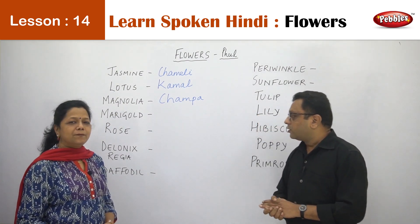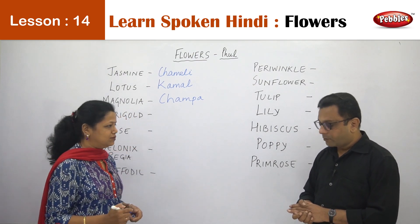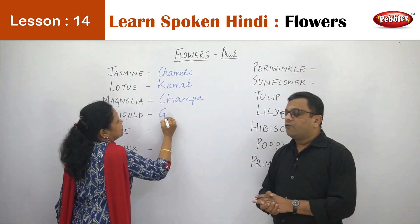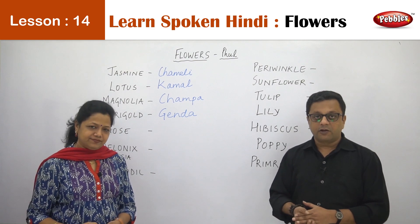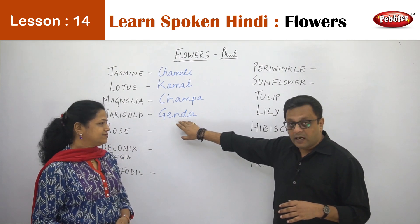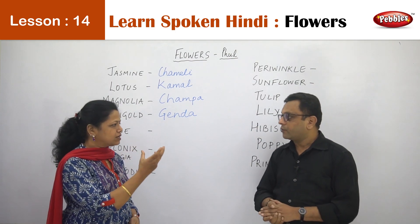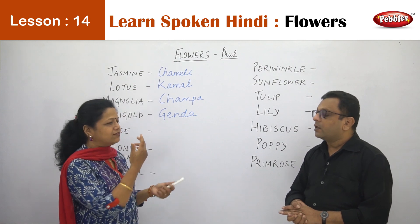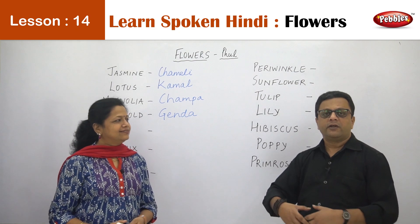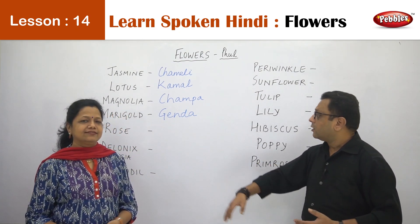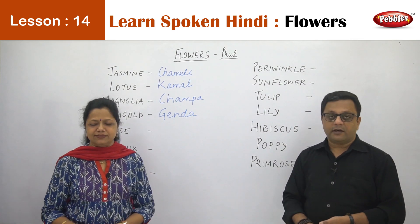The next is the Marigold. Marigold is very commonly used in Indian houses — that is Gende ka Phool, or Genda. For all auspicious occasions and all festivals, you will see the garlands of Genda or Marigold on your door. They come in yellow and orange colors, and people also make Rangolis of Genda flowers — designs made in front of the house, in front of the god, in temples, on any auspicious occasion.